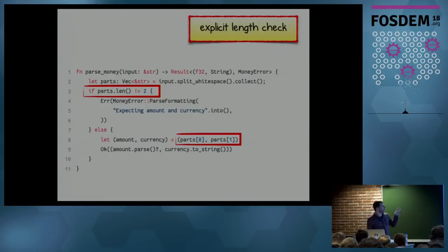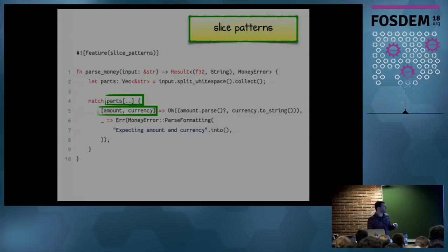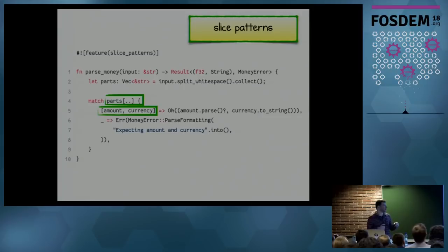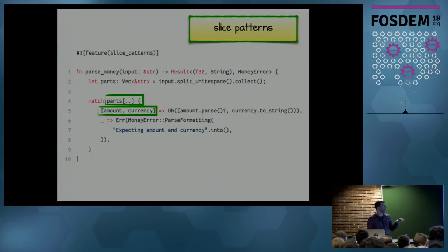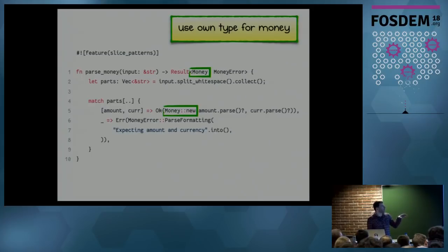We can separate all our own types from the standard error cases. But we're still checking for length explicitly — there might be a better way, and there is: slice patterns. With slice patterns, you take the vector, use `..` to match the whole thing, and compare it to different outcomes using `match`. You can check if you get both an amount and a currency — if so, return it; if not, throw an error. This is nightly-only right now, but it will make your code even more readable.